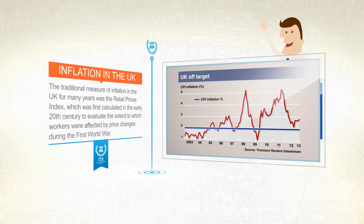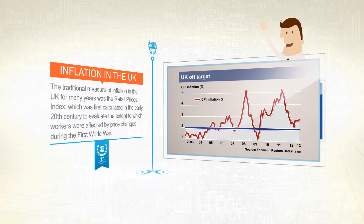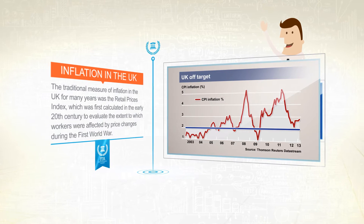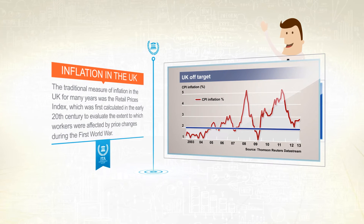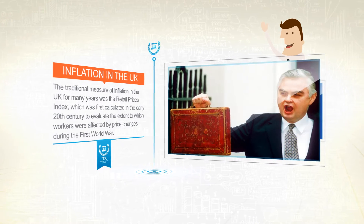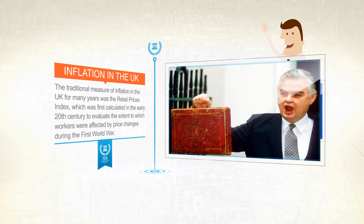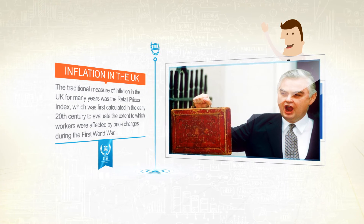A formal inflation target was first set in October 1992 by the Chancellor of the Exchequer, Norman Lamont, following the UK's departure from the exchange rate mechanism.